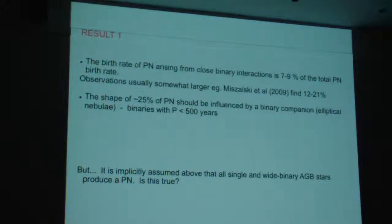And then you could say, if you say that binaries with periods less than 500 years can shape the nebula, produce elliptical nebulae, you find out that about 25% of planetary nebulae would be affected by the binary companion. And implicitly in these numbers is the assumption that all single and wide-binary AGB stars produce a PN. And some people don't like that.